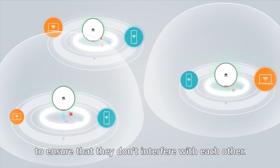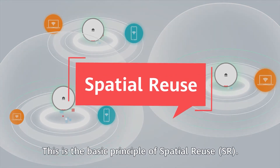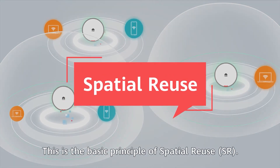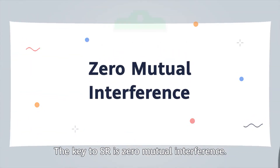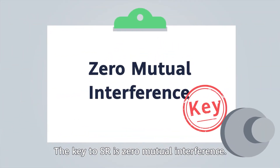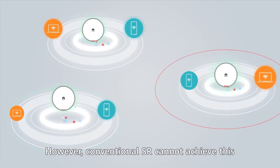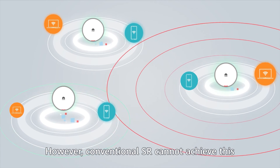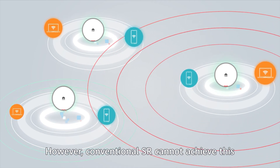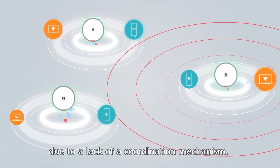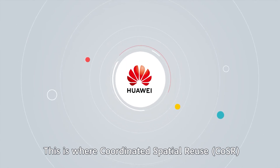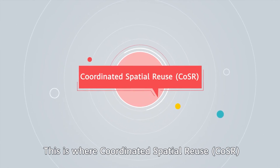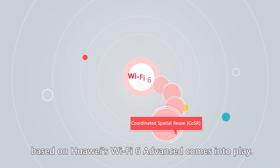This is the basic principle of SR. The key to SR is zero mutual interference. However, conventional SR cannot achieve this due to a lack of a coordination mechanism. This is where COSR, based on Huawei's Wi-Fi 6 Advanced, comes into play.